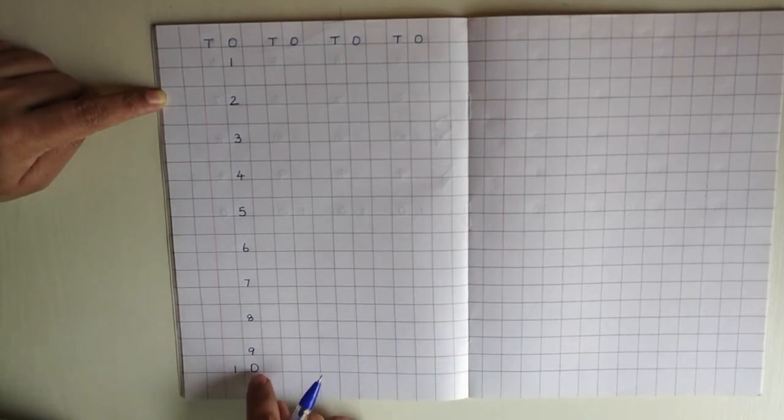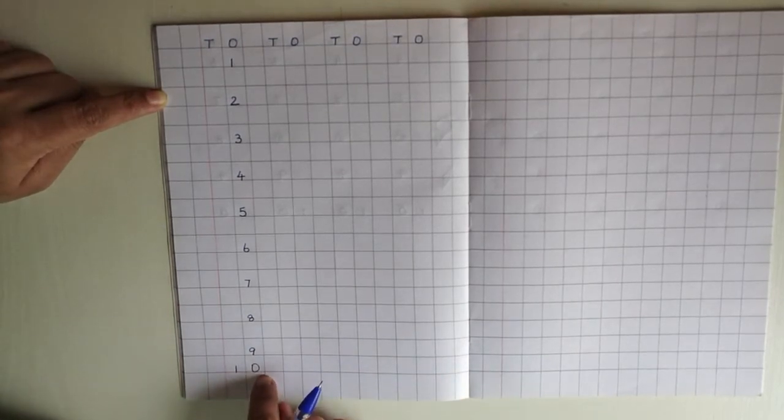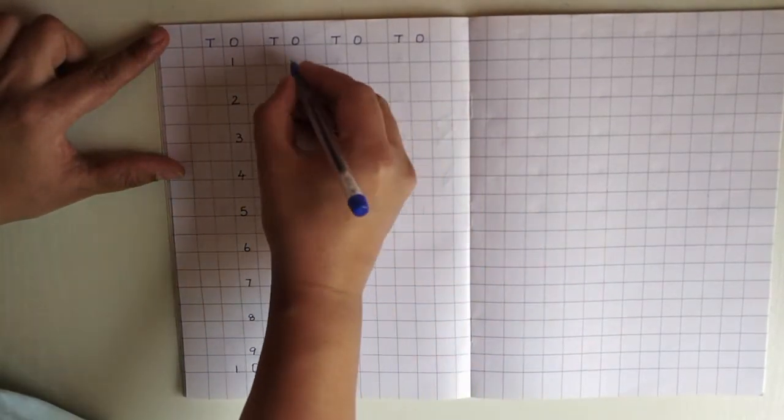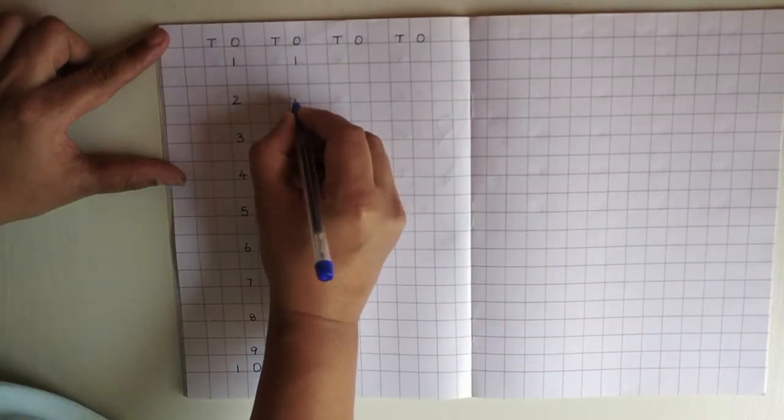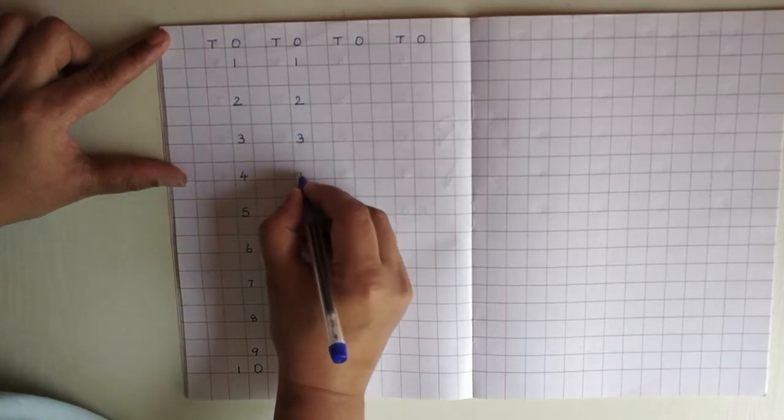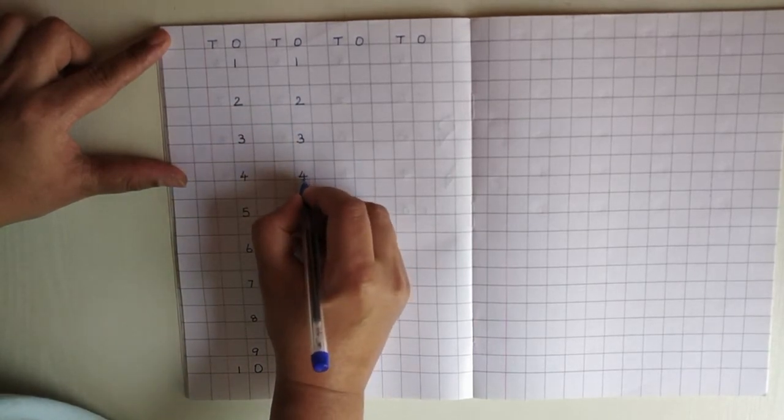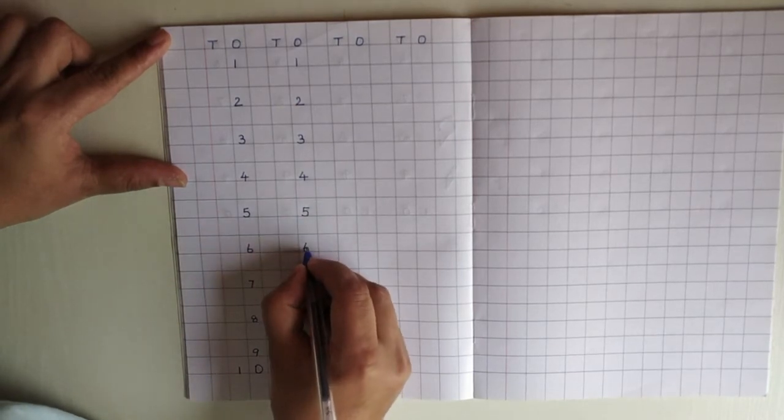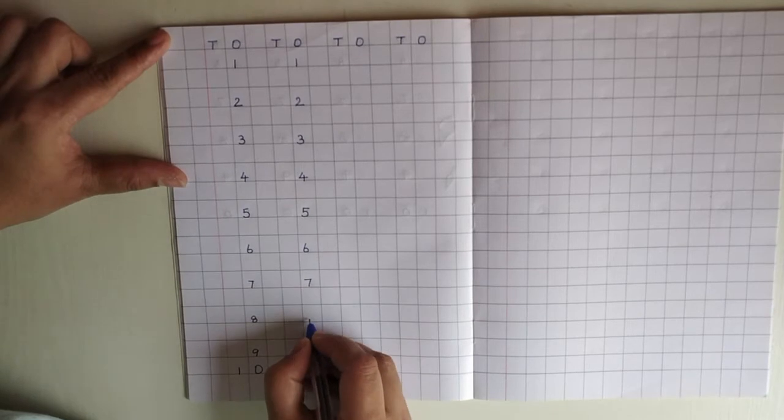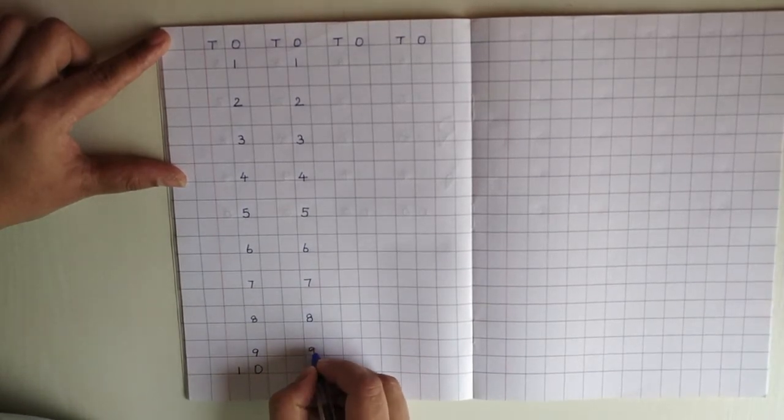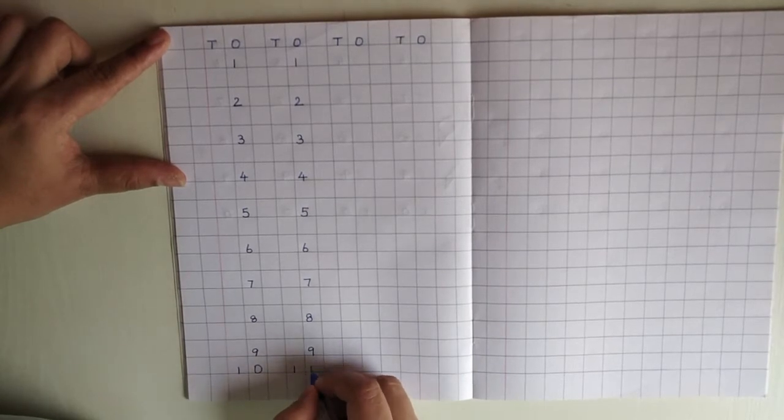Children, we will not leave the box over here because there is no place down. So we will write one more time. One, two, three, four, five, six, seven, eight, nine, one, zero, ten.